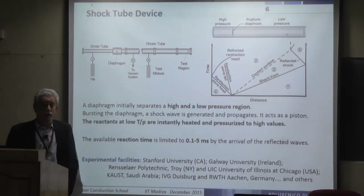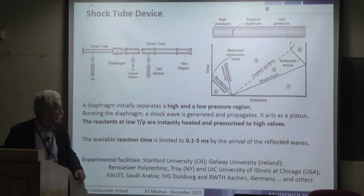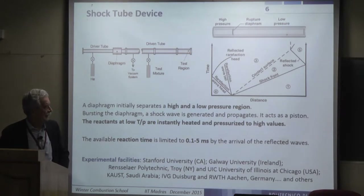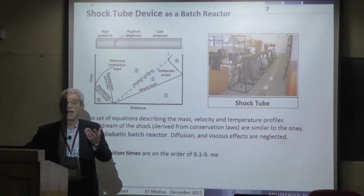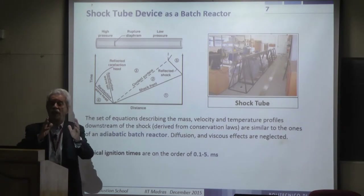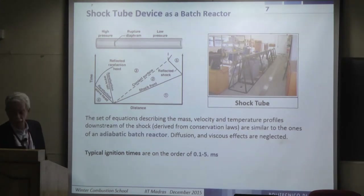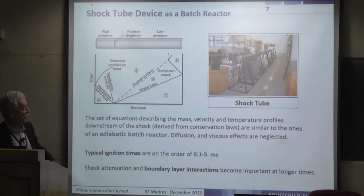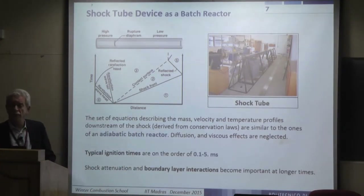There are several facilities around the world producing data from shock tube experiments. The shock tube is in principle an ideal, adiabatic reactor — we have a compression and can analyze reactions in this condition. However, there are shock attenuation and boundary layer interactions at longer times. Until we stay within about five milliseconds, these effects can be partially neglected.